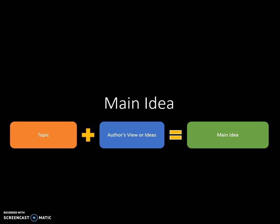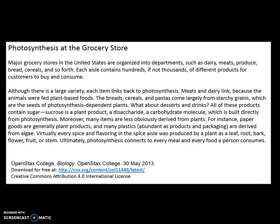Thinking about both the topic and the author's view and ideas helps you be able to either locate a main idea that's in the passage, or be able to determine what the main idea is if it's not written. We're going to practice doing this. Let's start off with a passage from OpenStax's biology textbook. Go ahead and pause the video and read through this passage, and we'll pick it up after you've read through it.